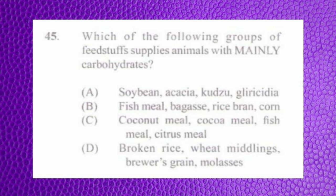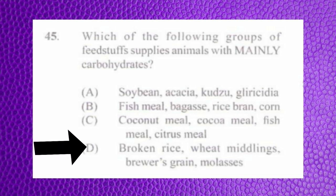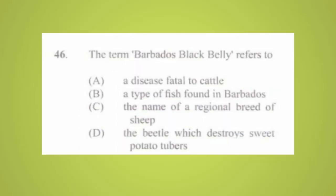Question number forty-five: which of the following groups of feedstuff supplies animals mainly with carbohydrates? a) soybean, acacia, kudzu, gliricidia, b) fish meal, bagasse, rice bran, corn, c) coconut meal, cocoa meal, fish meal, citrus meal, d) broken rice, wheat middlings, brewer's grain, molasses. The answer is d) broken rice, wheat middlings, brewer's grain, and molasses.